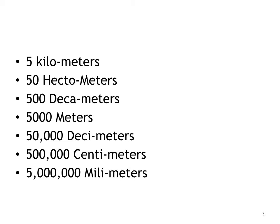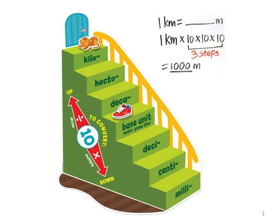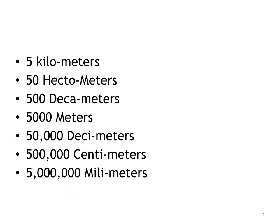If we follow starting at the very top step with 5 kilometers and go down, we multiply. 5 kilometers times 10 is 50 hectometers, times 10 is 500 decameters, times 10 is 5,000 meters, times 10 is 50,000 decimeters, times 10 is 500,000 centimeters, and times 10 again is 5 million millimeters. We just went down all the steps multiplying by 10 each time.